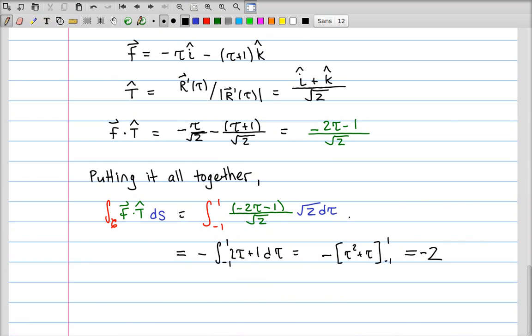So now we just put the pieces together. Again, contour integral becomes the integral from tau equals minus 1 to 1. f dot unit tangent becomes a scalar function of tau. And ds becomes a scalar multiple of d tau. All right, and so now again, we just have a calculus 2 problem that you can do without any trouble.